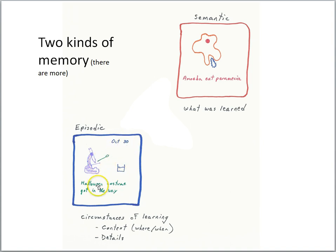Being October 30, the day before Halloween, you're in your Halloween costume and maybe the costume is getting in the way of you using the microscope. All of these things would be details of this particular episode. We're going to call that the circumstances of learning.